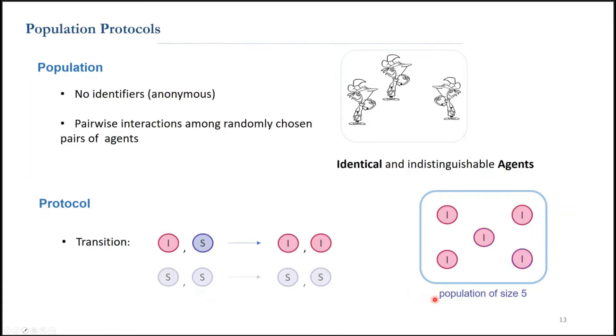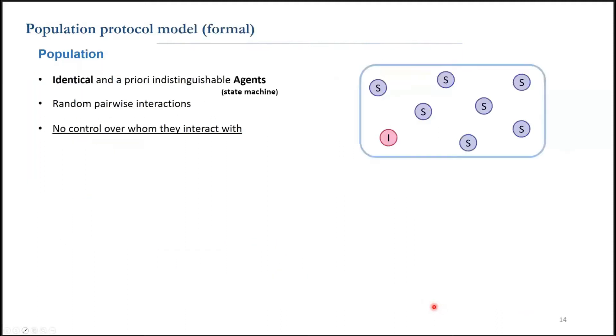Finally, by following this simple protocol, with at least one agent in the i state, we eventually reach a configuration that every agent in the population is also in state i. Formally speaking, a population consists of these identical and anonymous agents that interact through random pairwise interactions, with no control over whom they interact with.